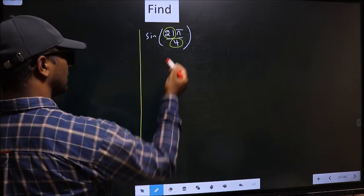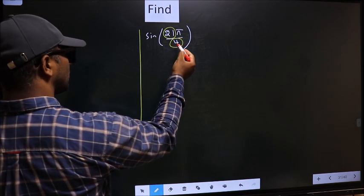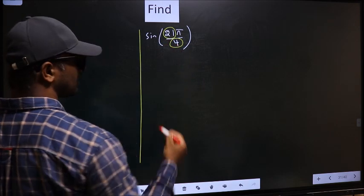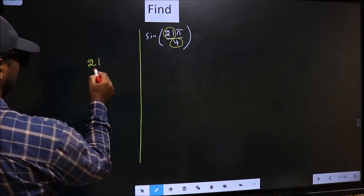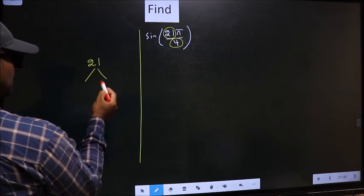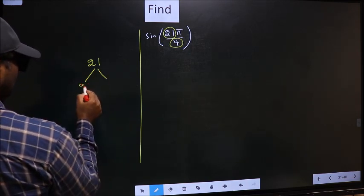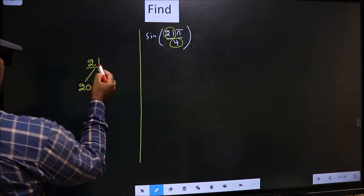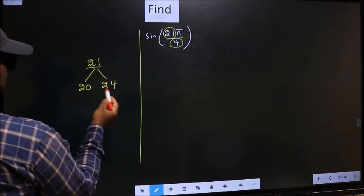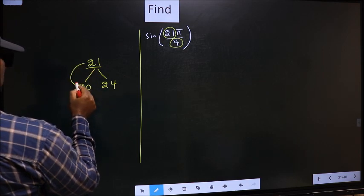Now, you should check. 21 is close to which multiple of 4? What I mean is 21 and here you write multiples of 4. 20 and 24. Now, 21 is close to which multiple? This is close to 20.